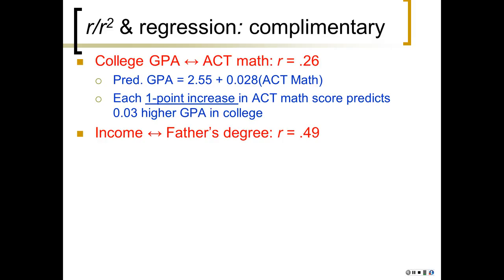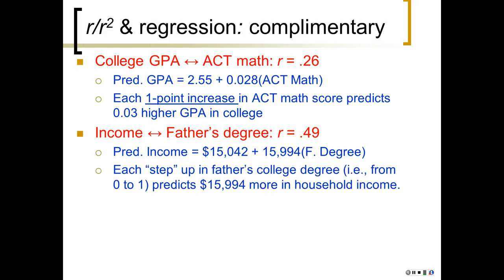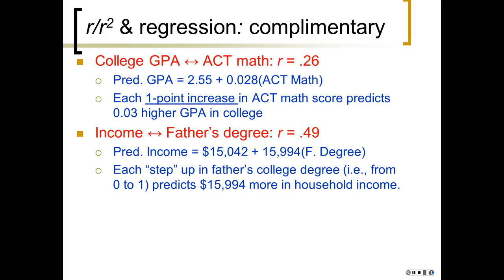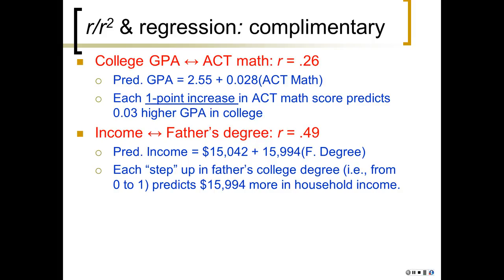And now we see that income is correlated with father's degree. Now, just with the correlation coefficient, all we see is that they're associated. But regression provides more detail. Predicted income is $15,042 plus $15,994 times the father's degree. Now, father's degree is just yes-no. Yes, you have a degree. Zero, you don't. So you multiply $15,994 either by one or by zero, depending on whether the person's father has a degree or not. Binary predictors, they get weird. So each step up in the father's college degree, in other words, going from no degree to one degree, predicts $15,994 more in household income. In other words, we predict people whose fathers have degrees to make about $16,000 more in the household than the families whose fathers don't have degrees.